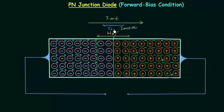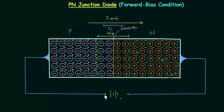In forward bias condition, we connect the positive terminal of the battery to the P side and the negative terminal of the battery to the N side of the PN junction diode. The positive terminal is connected to the P side and the negative terminal to the N side.